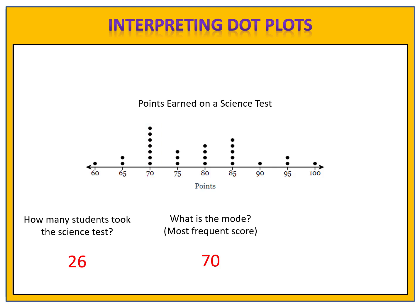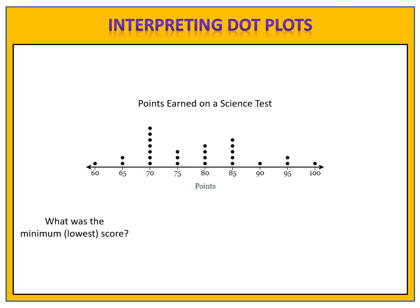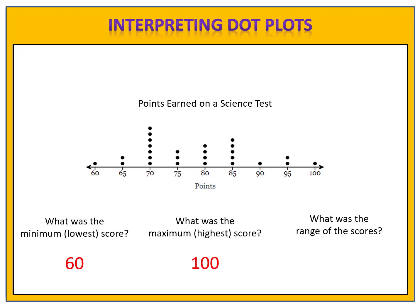We can also use the dot plot to analyze for the minimum and the maximum score. The minimum score is the lowest score that has a dot above it. On this dot plot, the minimum score is 60 points. The maximum score is the highest score that has any dots above it. On this dot plot, the highest score is 100 points. We can also use this to determine the range of the scores. Remember, range is maximum minus minimum. The maximum was 100, the minimum was 60, giving us a range of 40 points. The students' scores spread over an interval that was 40 points wide.